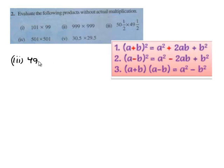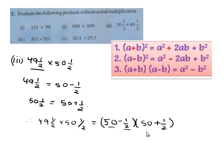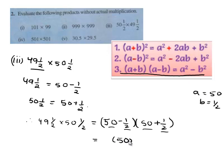Moving on to the third bit: 49 and 1/2 times 50 and 1/2. This can be written as (50 - 1/2) times (50 + 1/2). Therefore, 49½ × 50½ = (50 - 1/2)(50 + 1/2). It is in the form of (a - b)(a + b). From the third identity, (a + b)(a - b) = a² - b², where a = 50 and b = 1/2.